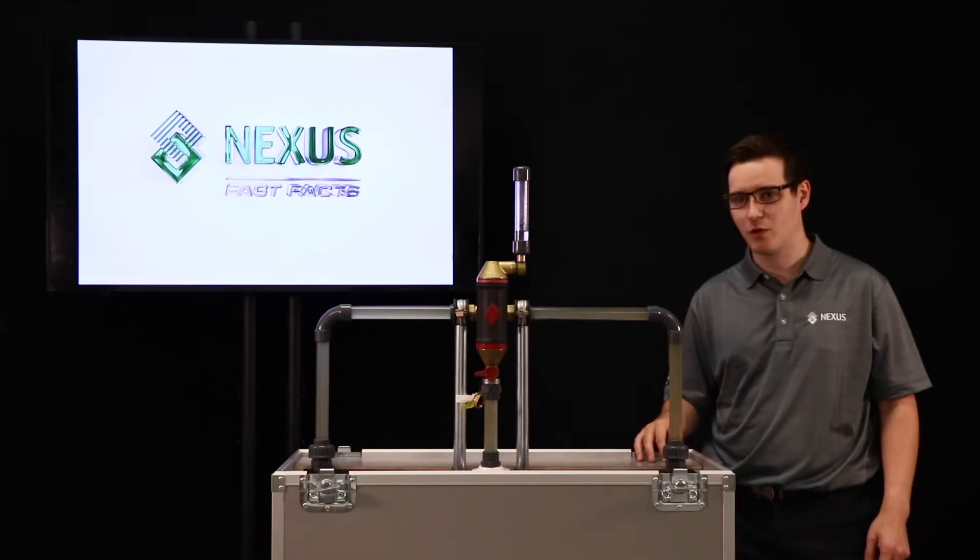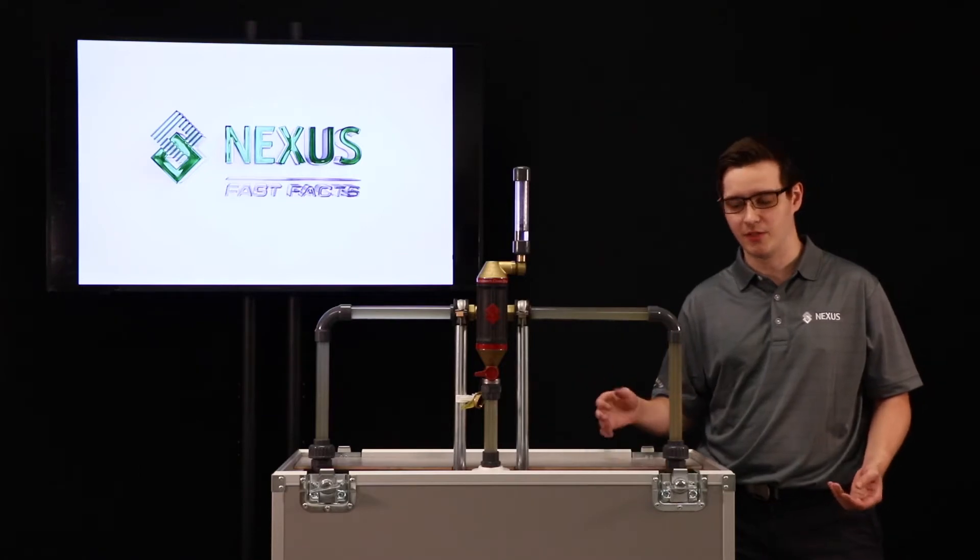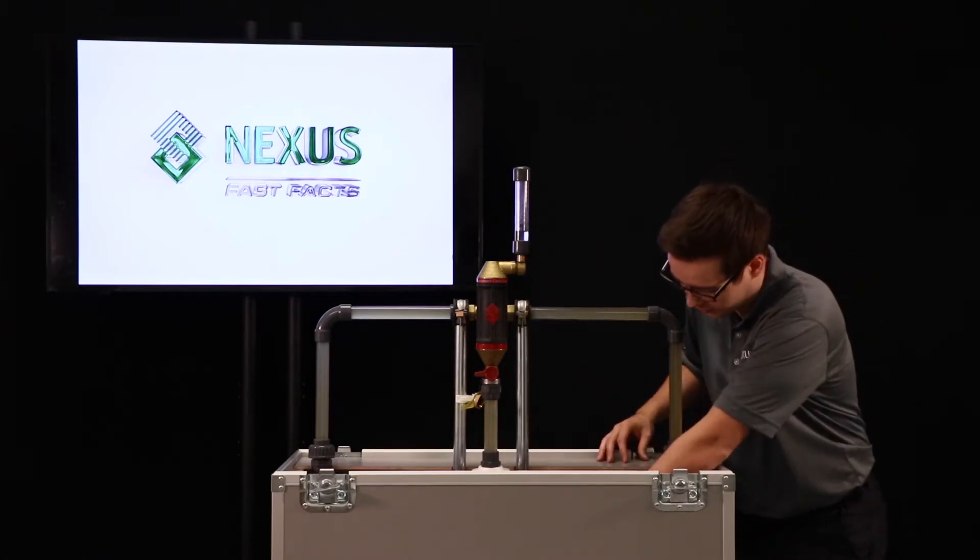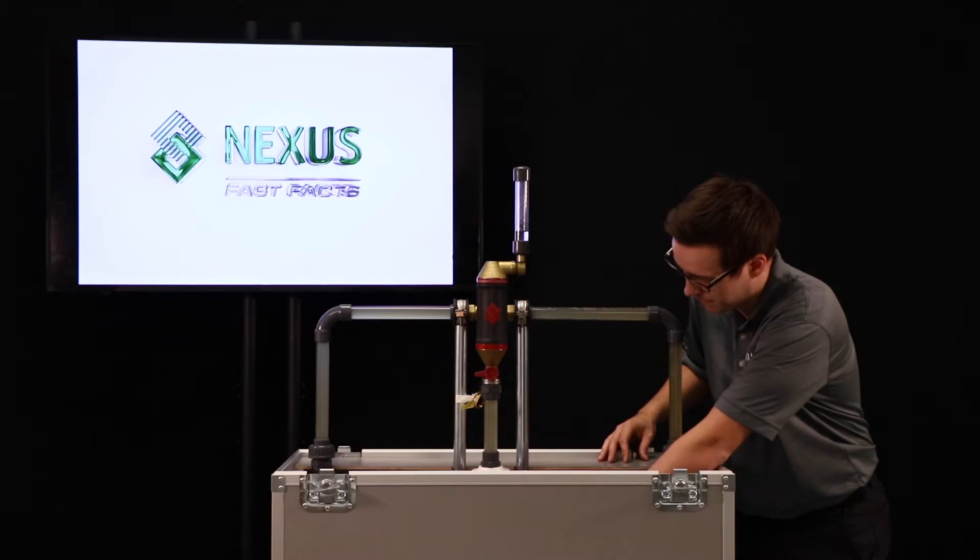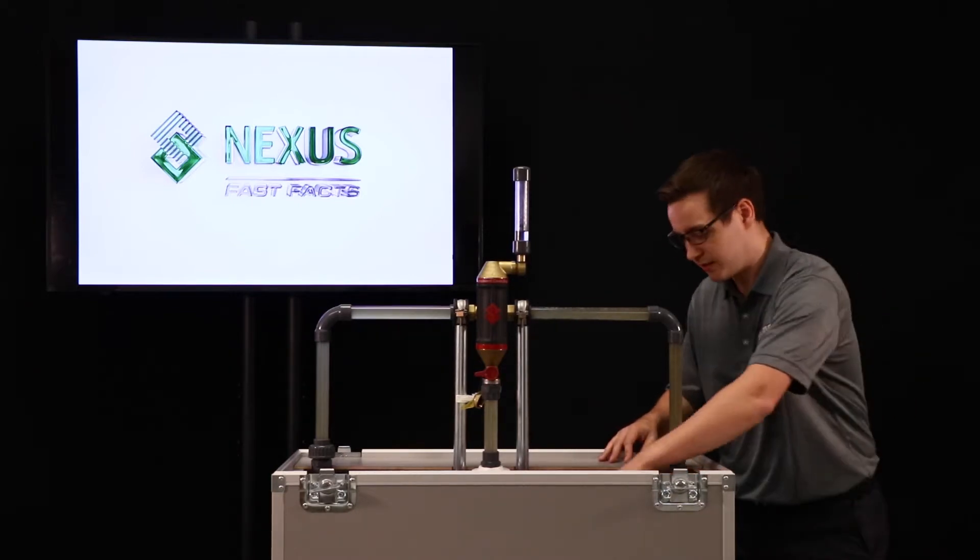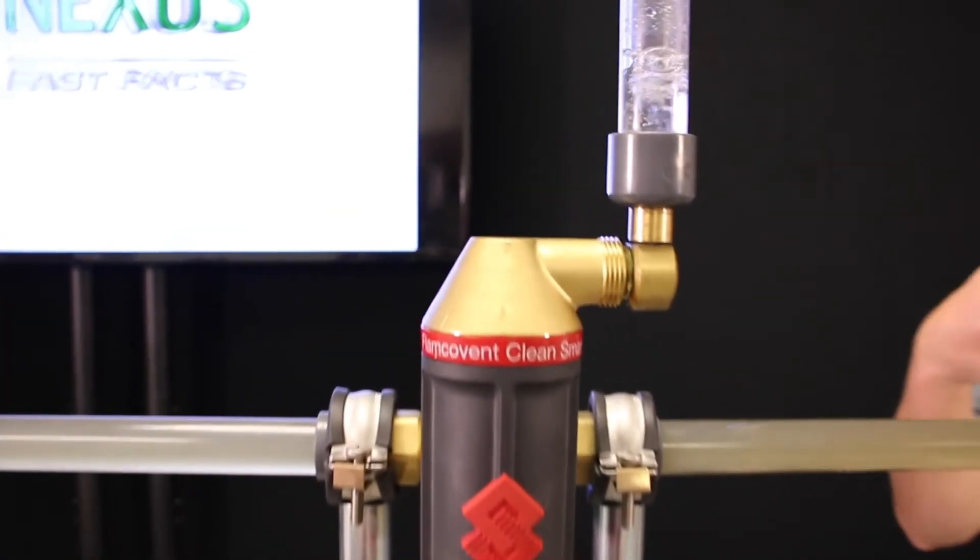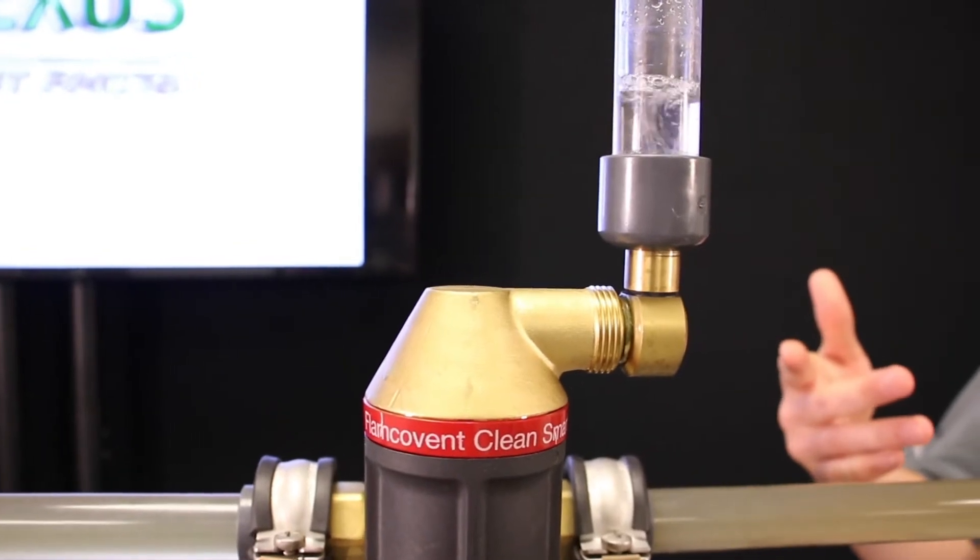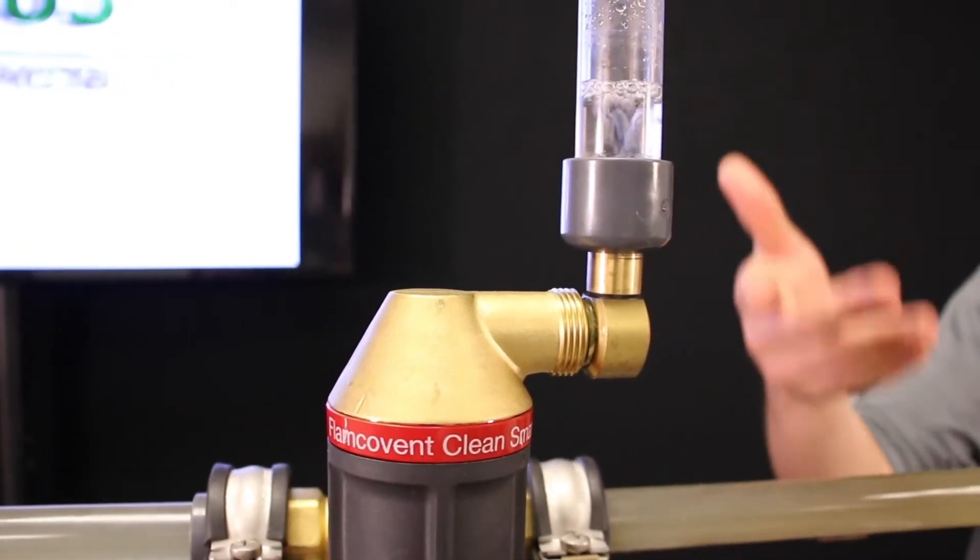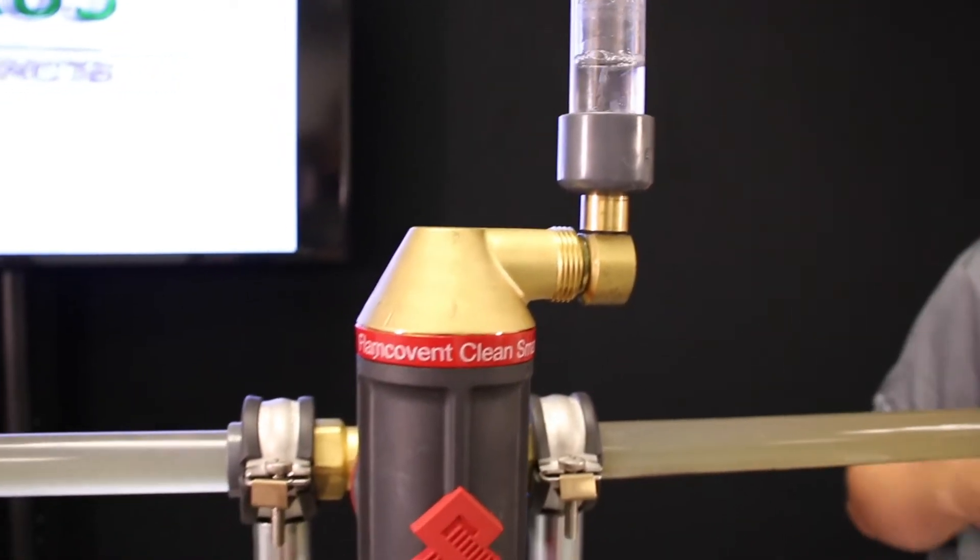So first things first, we're going to look at the air removal of this unit. And to do that, we're first going to introduce some air into the system. As it passes through the unit, the air is going to be collected and released at the top of the air vent. And that's where we see the bubbles coming out.